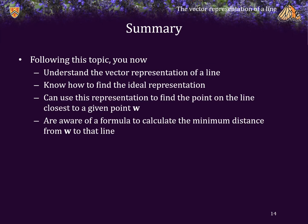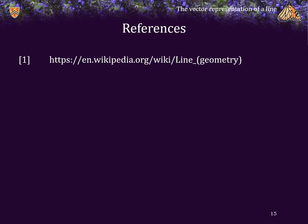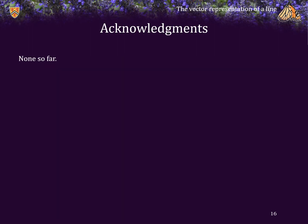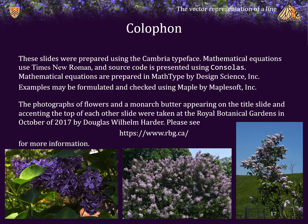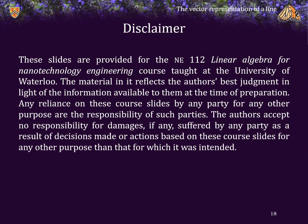Following this topic, you now understand the vector representation of a line. You know how to find the ideal representation of a given line. You can use this representation to find the point on the line that is closest to a given point w, and you are aware of a formula to calculate the minimum distance from w to an ideal representation of a line. Here are the references, acknowledgements, the colophon, and a disclaimer. Cheers!